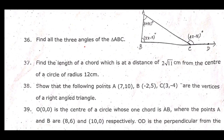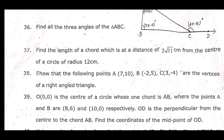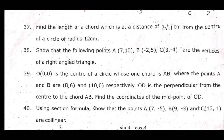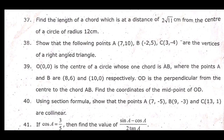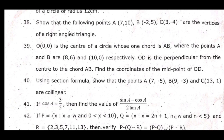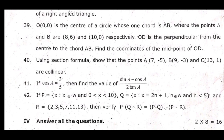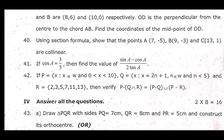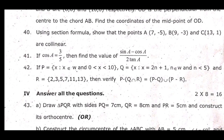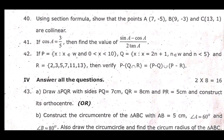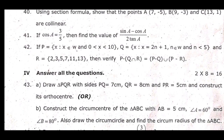36th: Find all the three angles of triangle ABC. 37th: Find the length of a chord which is at a distance of 2 root 11 centimeters from the center of a circle of radius 12 centimeters. 38th: Show that the points A(7, 10), B(-2, 5), C(3, -4) are the vertices of a right-angle triangle. 39th: O(0, 0) is the center of a circle whose chord AB has points A(8, 6) and B(10, 0). OD is the perpendicular from the center to the chord AB. Find the coordinates of the midpoint of OD.